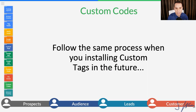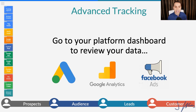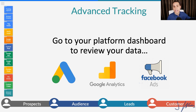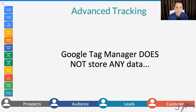That's the only difference when it comes to tracking codes — you follow the same process. When it comes to actually tracking your data, all your data is on the other platforms: Google Analytics, Facebook Ads, Google Ads. Tag Manager does not store any data — it's the file cabinet that fires the pixel and sends the data off to where it needs to go. For advanced tracking, go to whatever ads platform you're using and go through their documentation on how to set up more conversion or event tags.